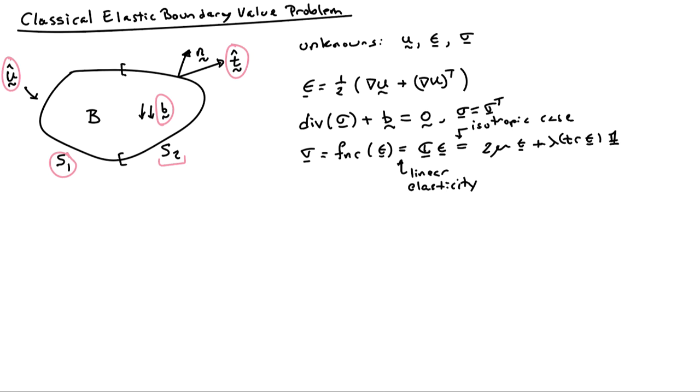And if it's isotropic linear elasticity, then that's explicitly 2 mu epsilon plus lambda trace epsilon identity. So mu and lambda being the Lamé parameters.